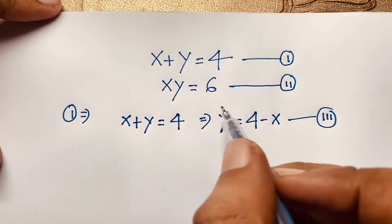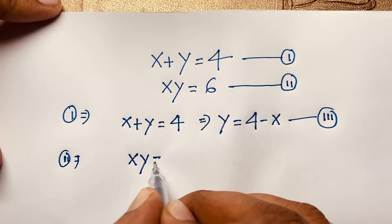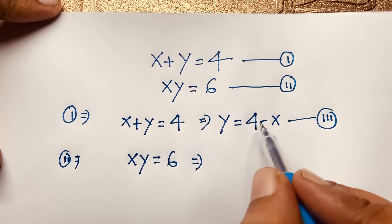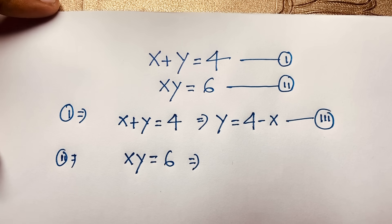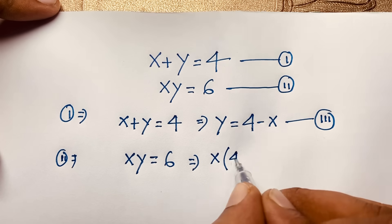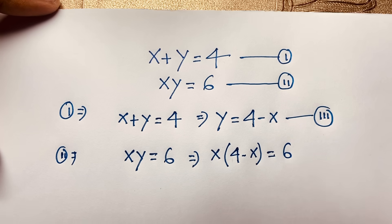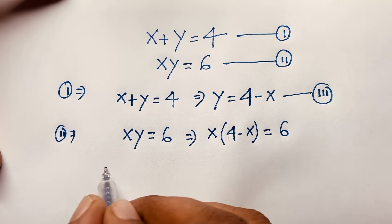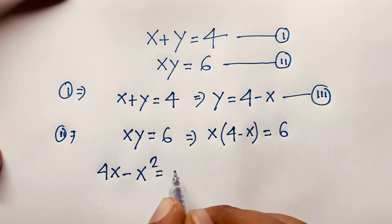Now our second equation: x times y is equal to 6. Remember that y is equal to 4 minus x. I put this value in this equation. So it will be x times (4 minus x) is equal to 6. This gives us 4x minus x squared is equal to 6.